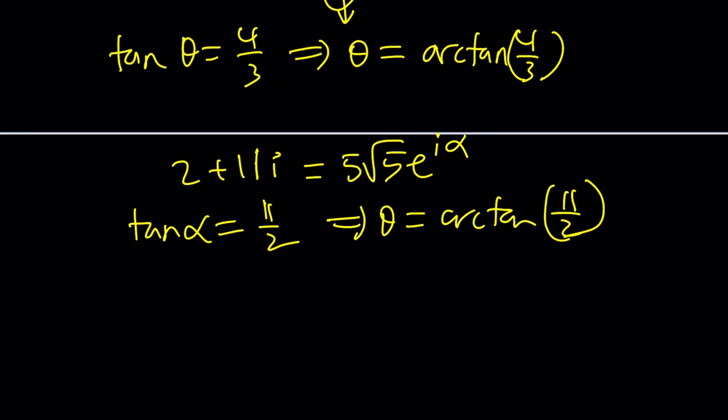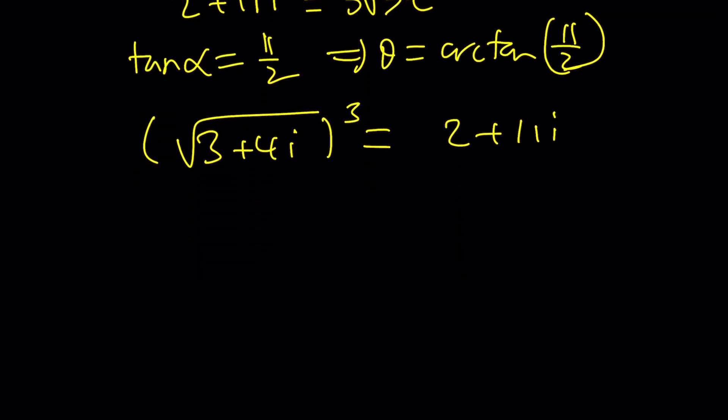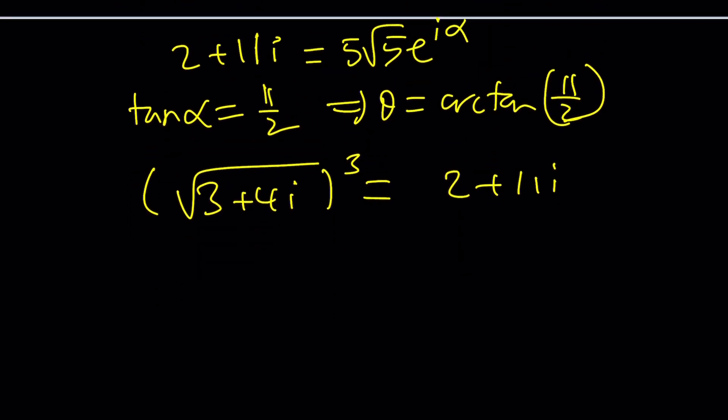Wait a minute, guys. 3 plus 4i needs to be square rooted and then raised to the third power to give us 2 plus 11i. So, z is 3 halves. Uh-oh. That was super tricky and it tricked myself too. So, 3 halves seems to be the solution because this looks like a good equation, right? Don't you think? Okay, great. But that's not the only solution.